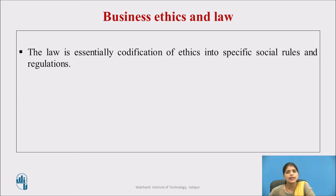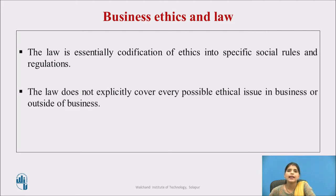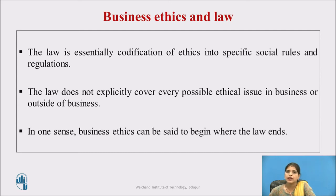The best way of thinking about ethics and the law is in terms of two intersecting domains. The law might be seen as the minimum acceptable standards of behaviour. The law does not explicitly cover every possible ethical issue in business or outside of it. Similarly, it is possible to think of issues covered by the law that are not really about ethics. In one sense, business ethics can be said to begin where the law ends — it is primarily concerned with issues not covered by the law, or where there is no definite agreement on whether something is right or wrong.